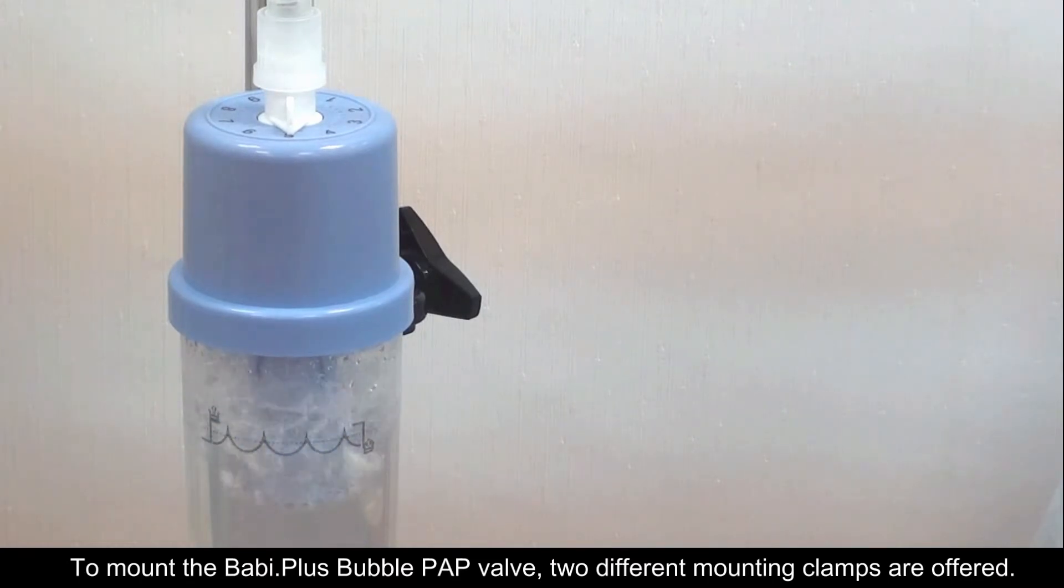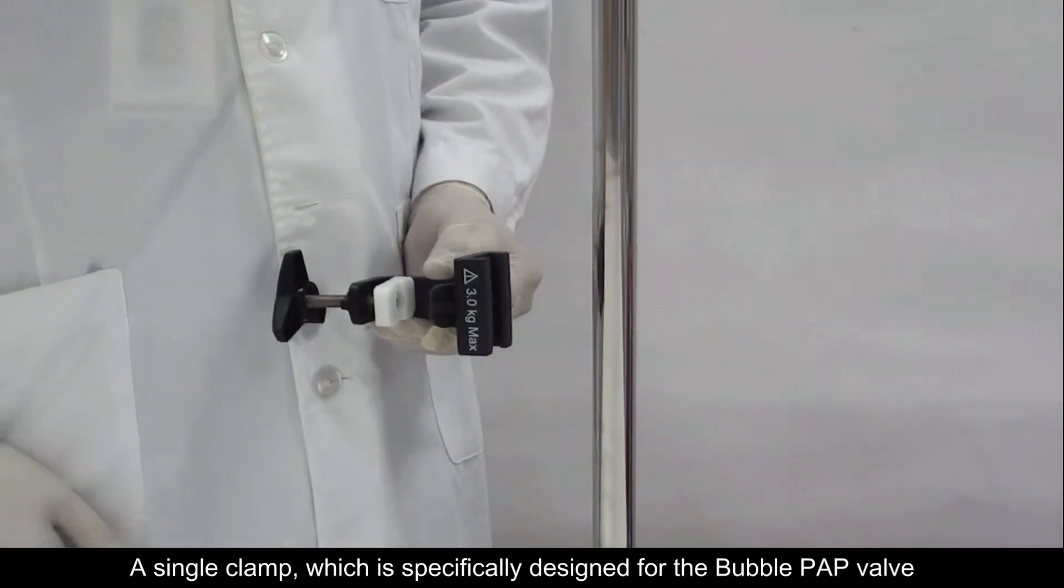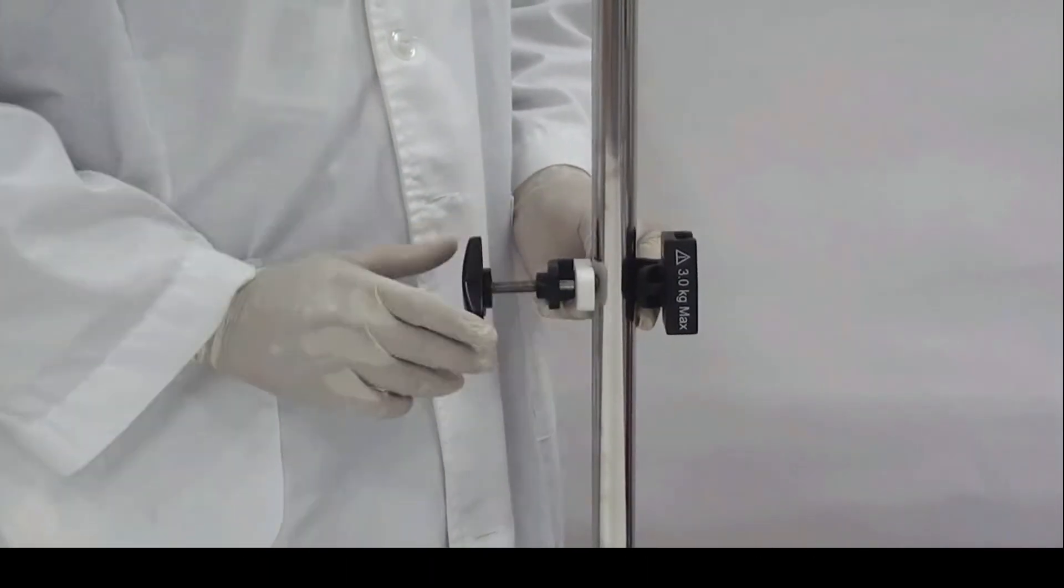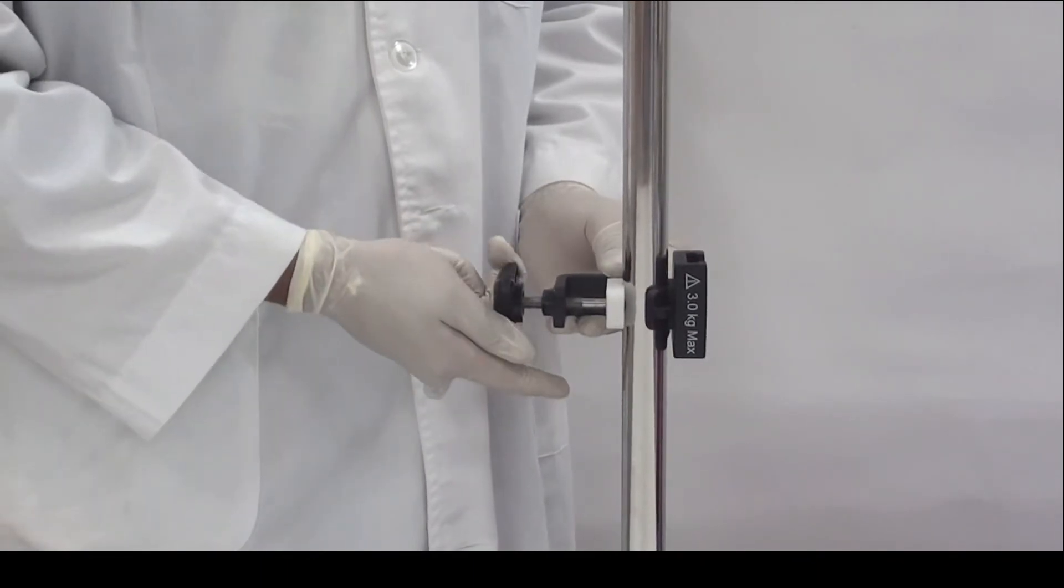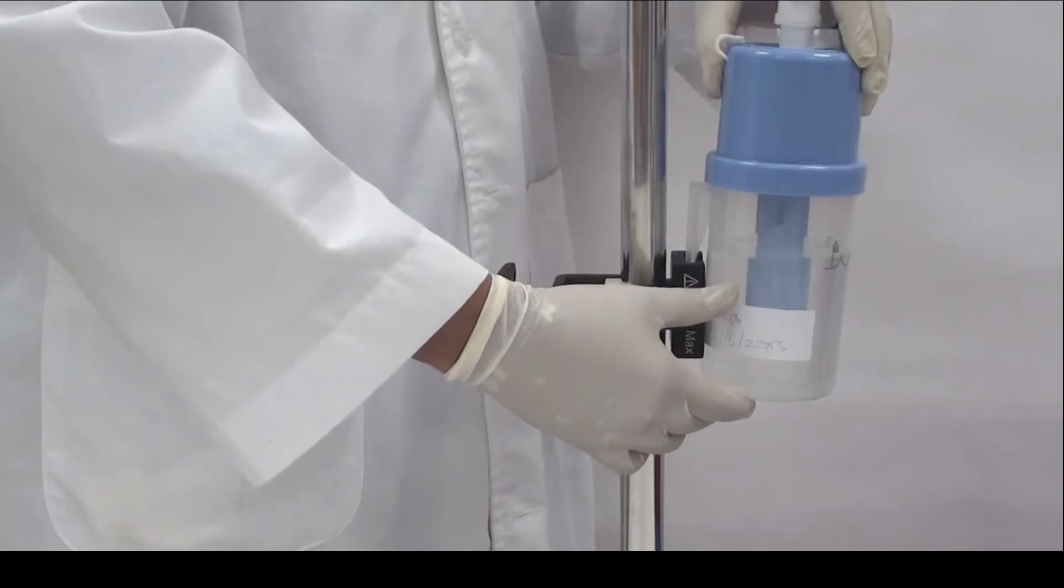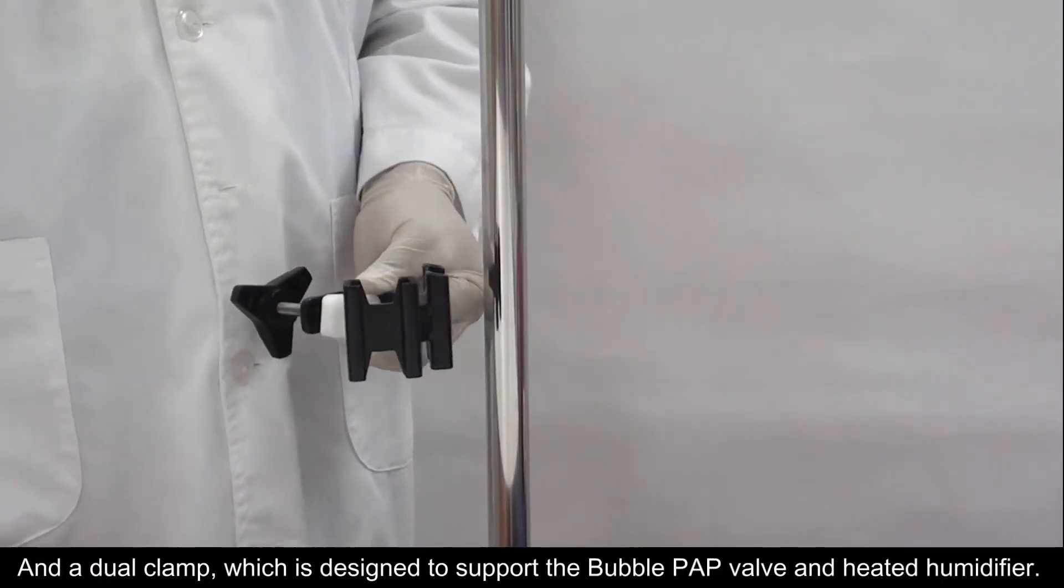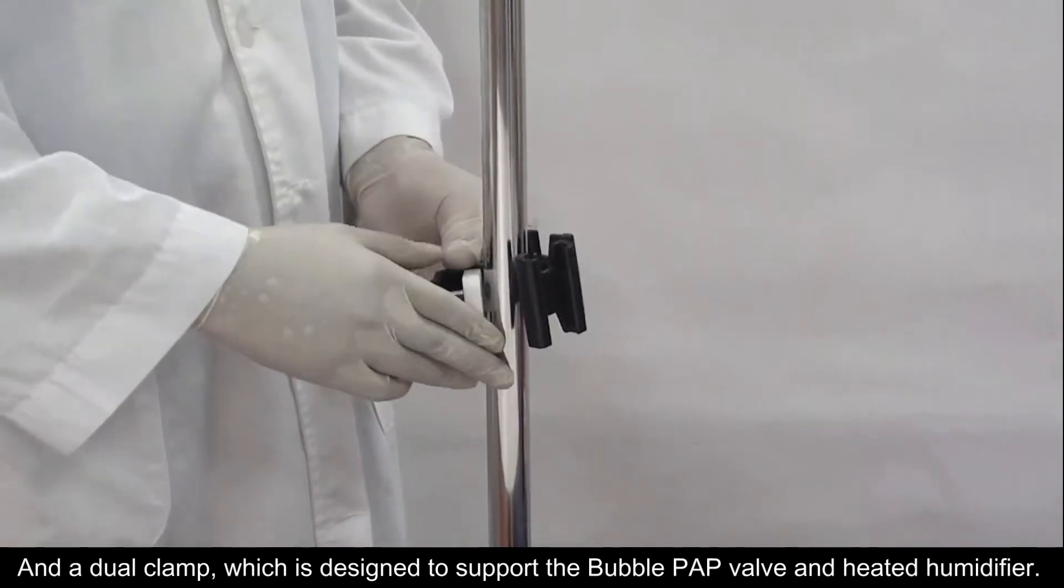To mount the Baby Plus bubble PEP valve, two different mounting clamps are offered: a single clamp, which is specifically designed for the bubble PEP valve, and a dual clamp, which is designed to support the bubble PEP valve and heated humidifier.